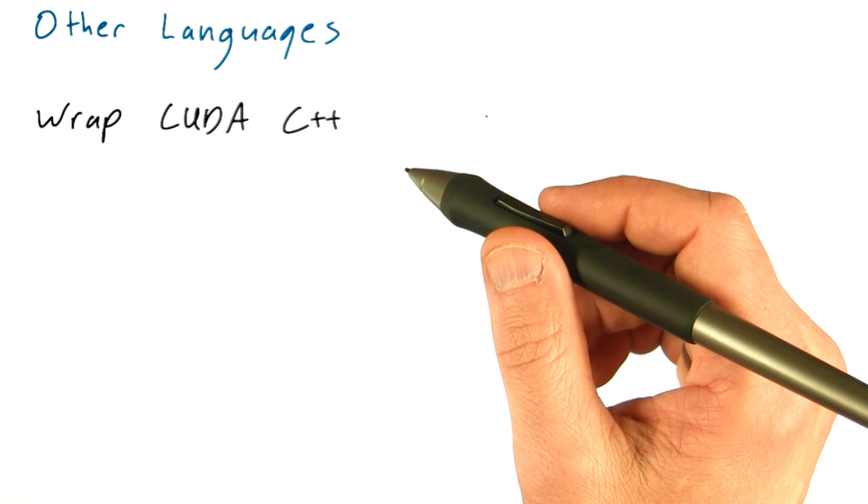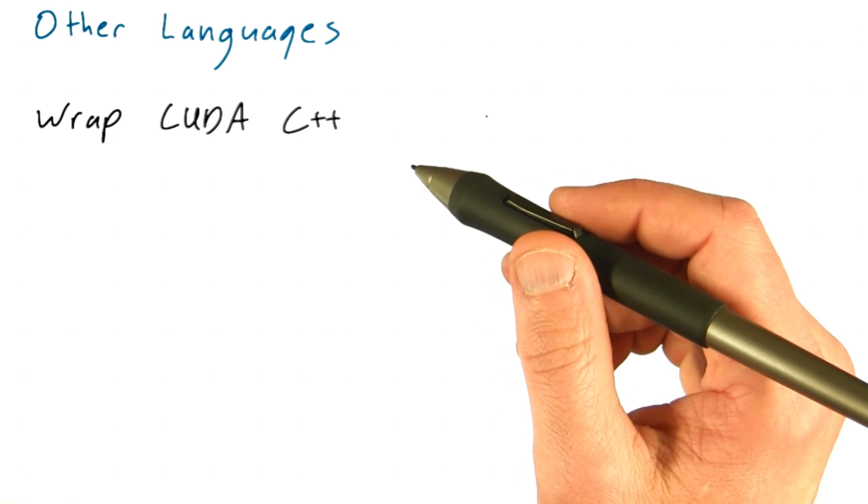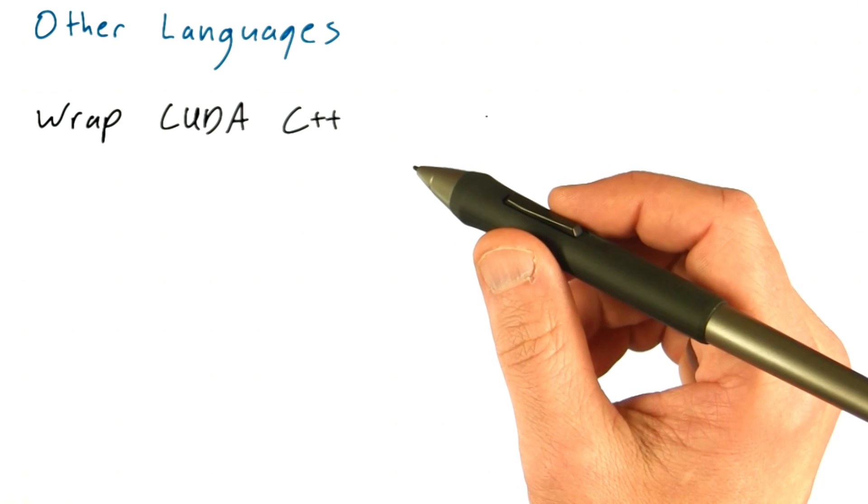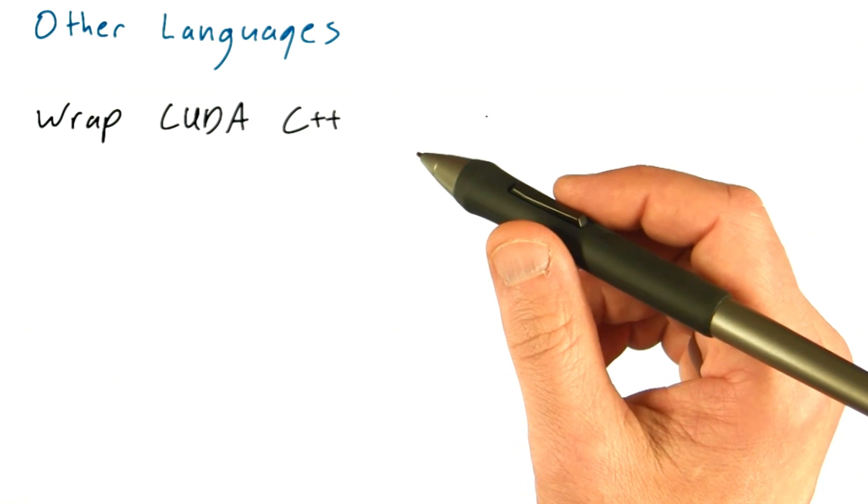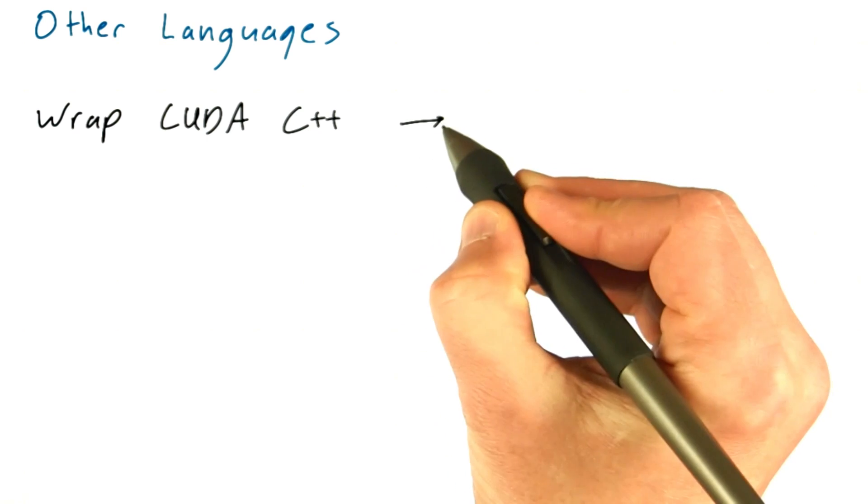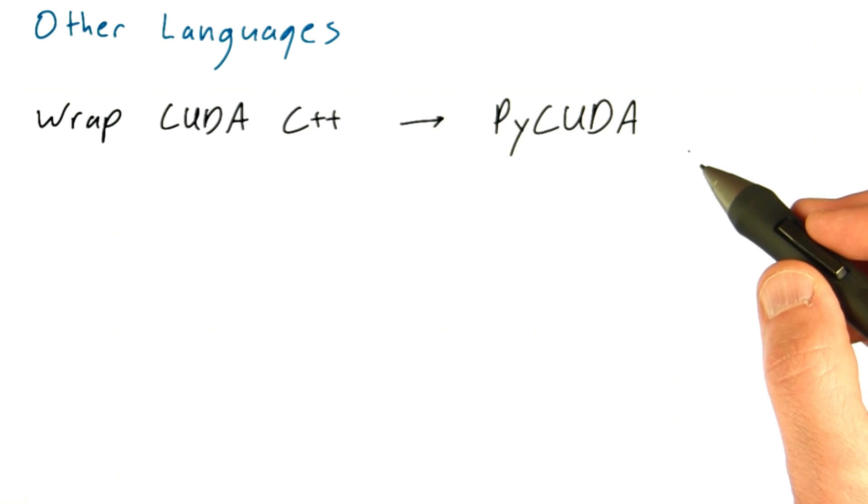The lightweight version of targeting CUDA is simply to wrap CUDA C++ into the other language so that you can transfer data to the GPU and call a CUDA C++ kernel from within the other language. A great example of this is PyCUDA, which allows Python programs to call CUDA C++ kernels and even to construct them programmatically from within Python.